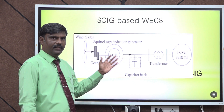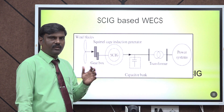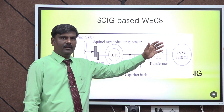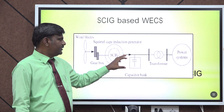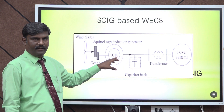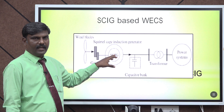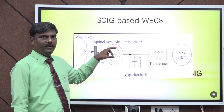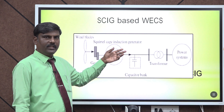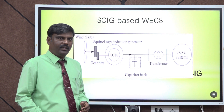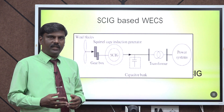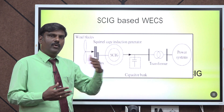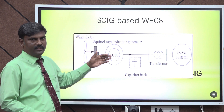During starting of this wind energy conversion system, initially we have to operate this system as a motor. For that it draws power from the grid — this induction generator initially runs as a motor. After that only it is coupled with the wind turbine and the speed of the shaft is brought to more than the synchronous speed, because we have to bring that speed above synchronous speed and for that external input is needed.